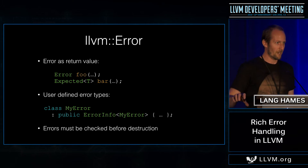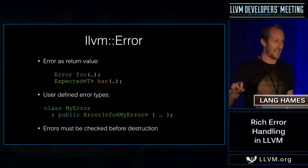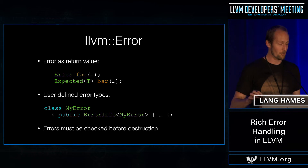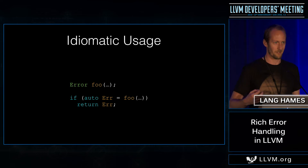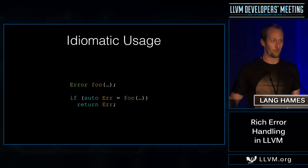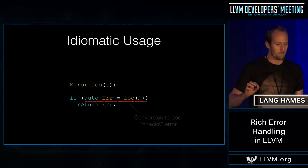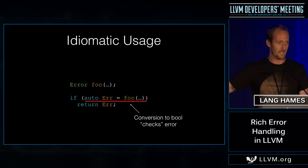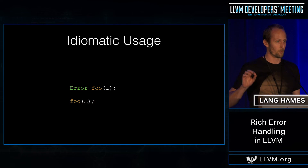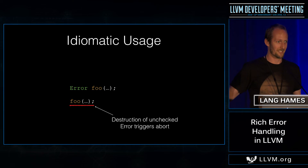Each of these lightweight wrappers has a little flag in it that tells the error whether or not you've checked it — whether you've done due diligence in handling that error. If you don't check your error, it will blow your program up. Idiomatic usage looks like this: you have a failing function foo that returns an Error, and you call it by saying 'if auto error = foo() return error'. By capturing the value and converting it to Boolean, you've done due diligence and checked your error. If you haven't got an error and you continue in the else case, that error will be safely destructed. If you try to write code without checking that value, we'll blow the program up right there.